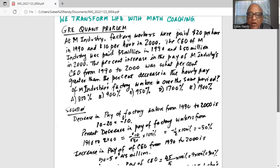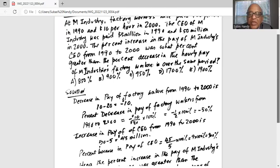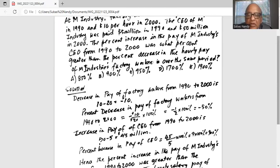Now, increase in the pay of CEO from 1990 to 2000 is 50 minus 5. The CEO's pay in 1990 was 5. In 2000, it's 50. So the increase is $45 million. Percent increase in pay of CEO is 45, the increase, divided by the starting salary of $5 million in 1990.